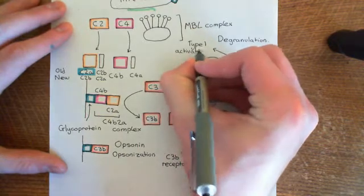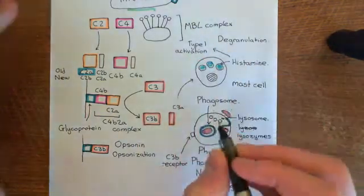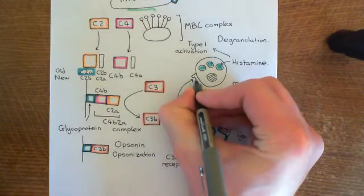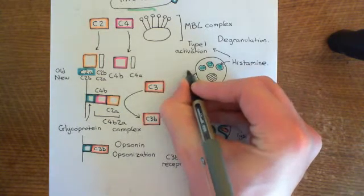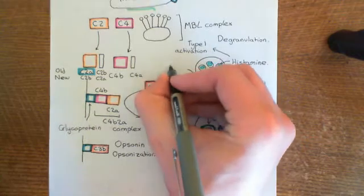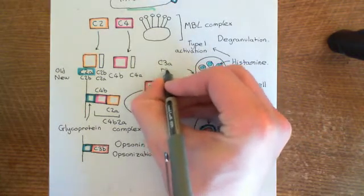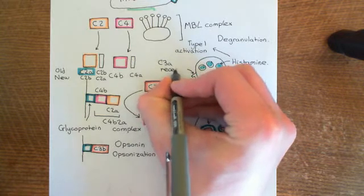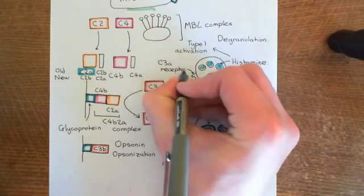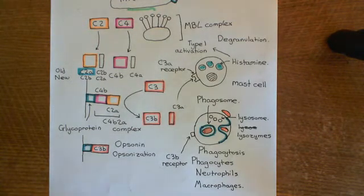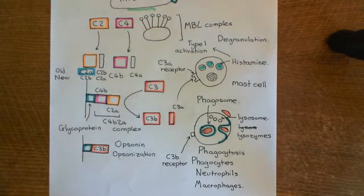C3A is one of the signals that triggers mast cell degranulation. There is a receptor on the surface of mast cells known as the C3A receptor. When C3A binds to the C3A receptor, it causes mast cell degranulation. Histamine will be released and it will lead to type 1 activation of the endothelial cells of the blood vessels in that area.